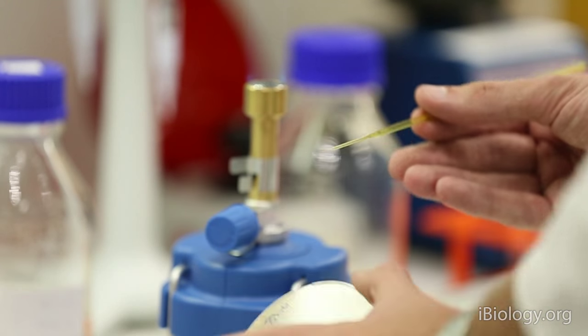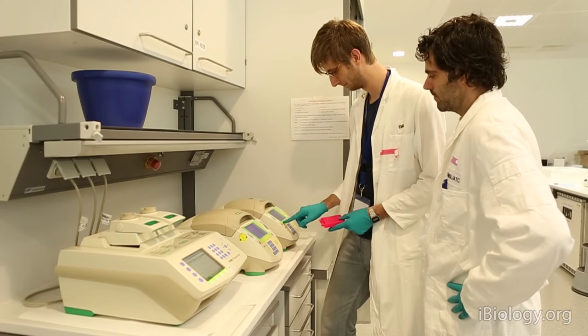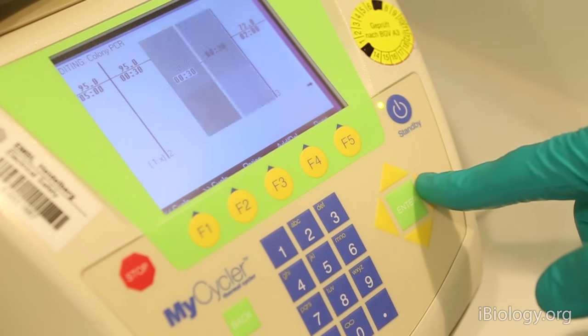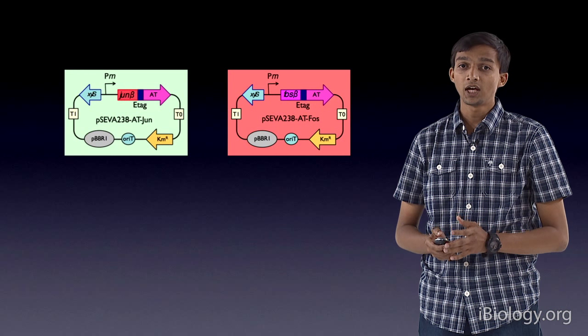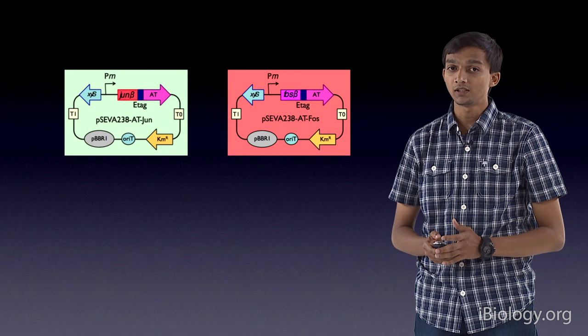We check the fluorescence genes have inserted in the correct part of the genome or not using the colony PCR. Now that we have two identifiable strains, we can start thinking about our adhesins.